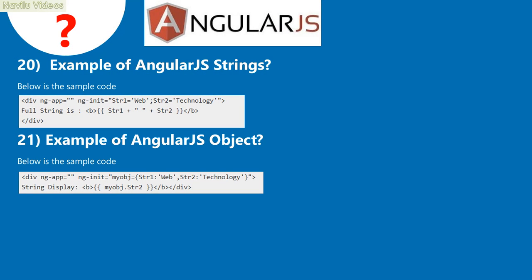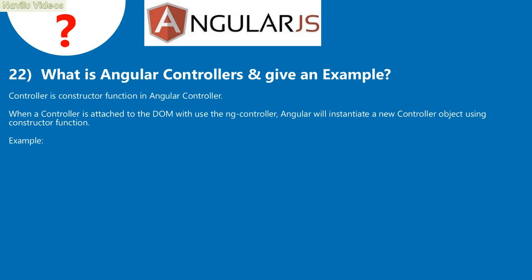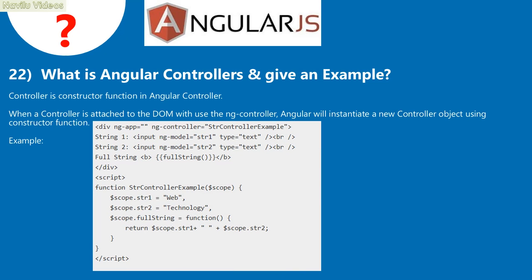Example of AngularJS — below is the sample code. Example of an AngularJS object. What is an AngularJS controller and give an example? A controller is a constructor function in AngularJS. When a controller is attached to the DOM using ng-controller, Angular will instantiate a new controller object using the constructor function.